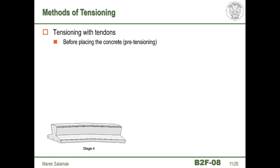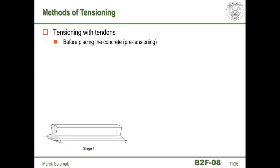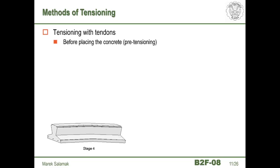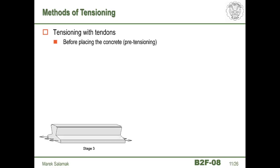In pretensioning, in the first stage we lay the reinforcement in the empty formwork and stress the pre-stressing tendons, anchored to external resistance blocks. Then we place the concrete, and after its hardening we cut the strands, transferring the pre-stressing force to the prefabricated beam. As you can see, it bends upwards because the tie rods are in the lower section, just as it was in our sponge experiment at the start of the lecture.